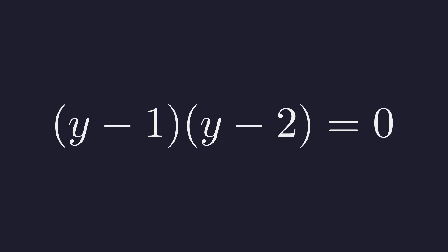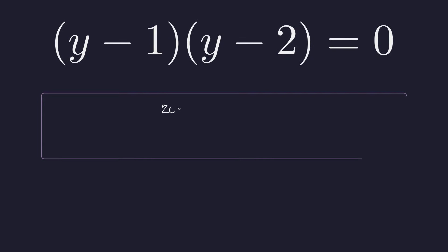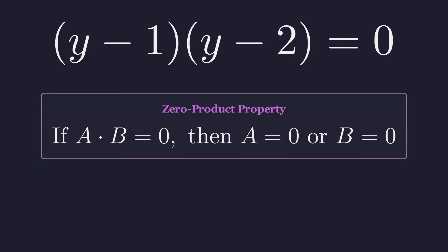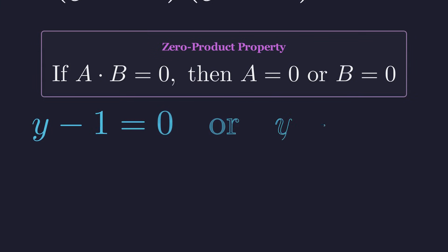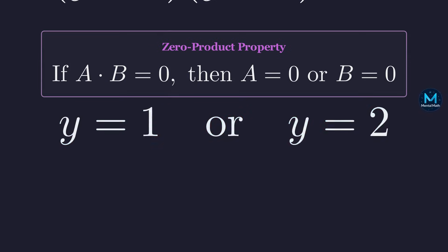To find the solutions for y, we use the zero product property. If the product of two factors is zero, then at least one of the factors must be zero. This means we have two possible cases to solve: either y minus 1 is 0 or y minus 2 is 0. Solving these simple linear equations gives us two solutions for y: y equals 1 or y equals 2.